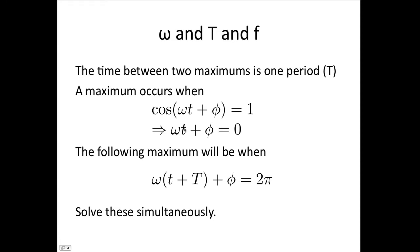So it will occur when little t is plus big T, plus one period. So our time is replaced with t + T, plus φ. And this is 2π radians later, so it equals 2π. So now we just need to solve these simultaneously.